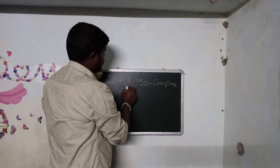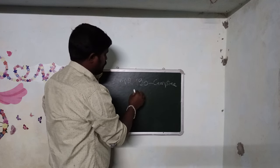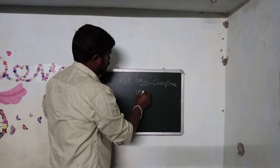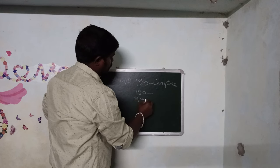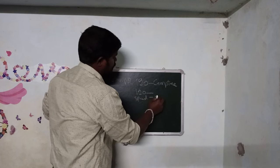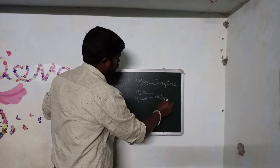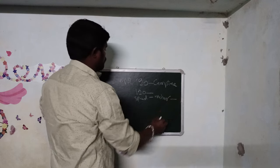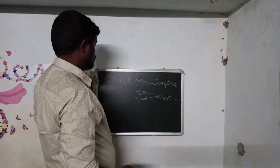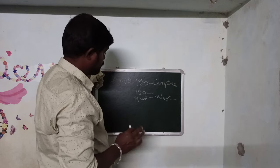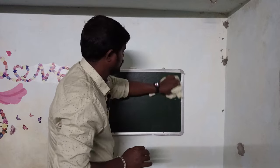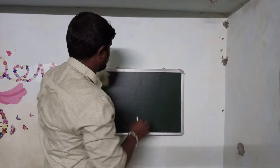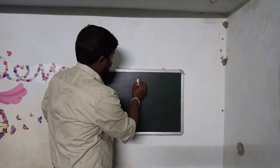NPR cameras can capture number plates even when vehicles are moving at speeds from minimum to 120 kilometers per hour. They capture the plate at the right moment.